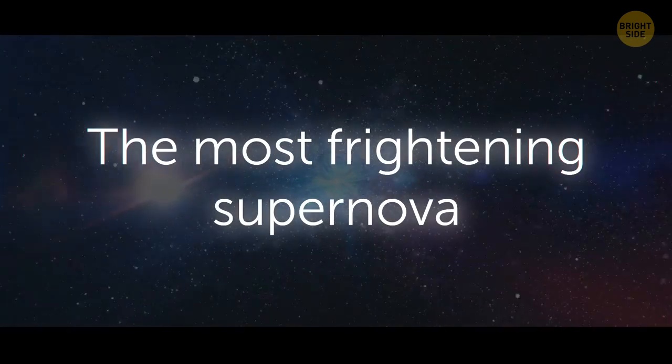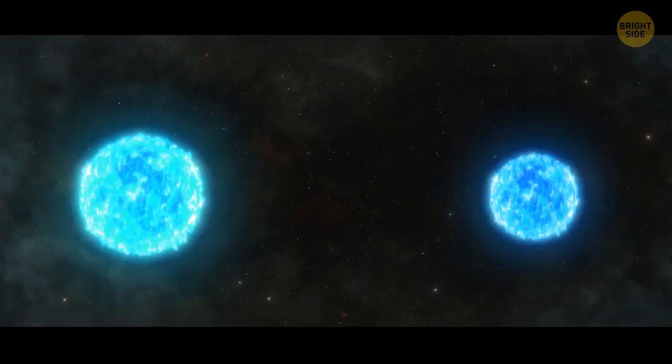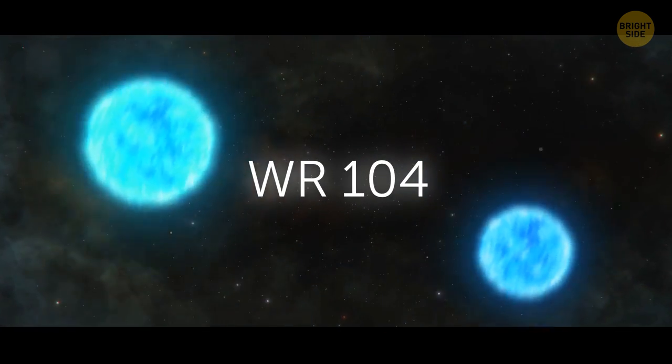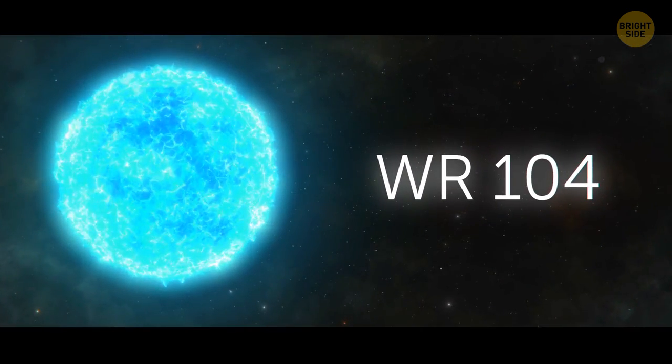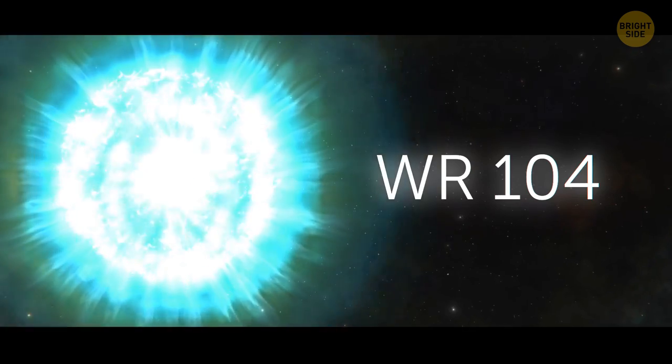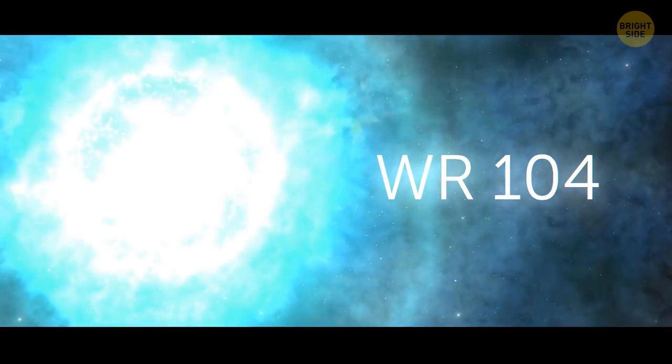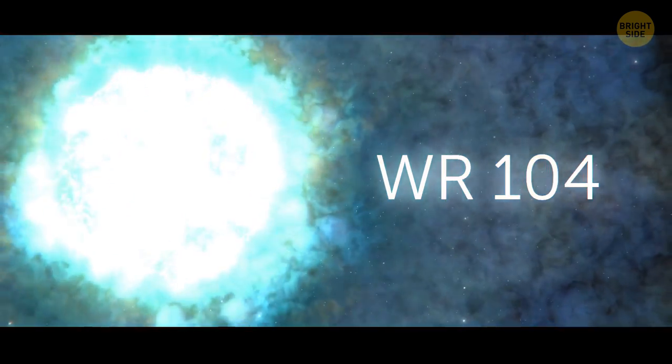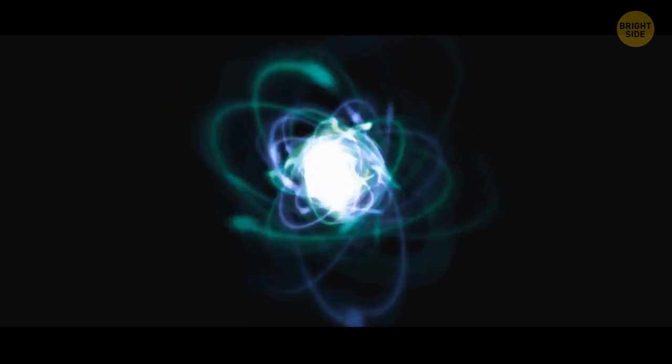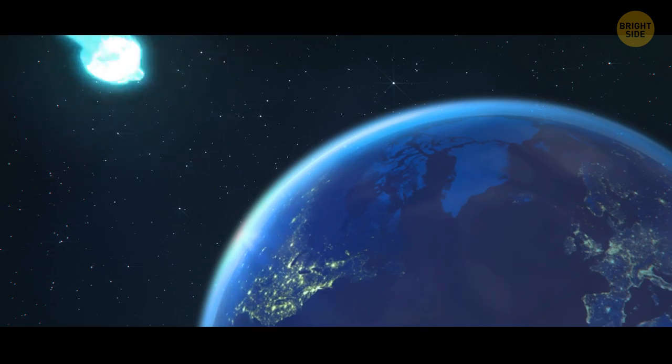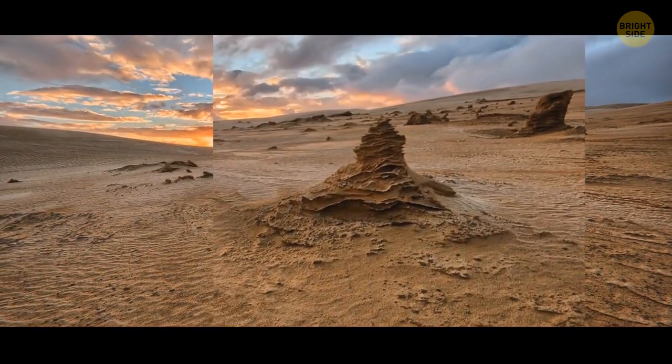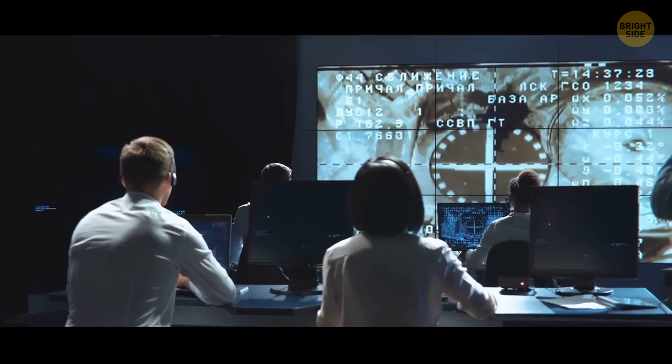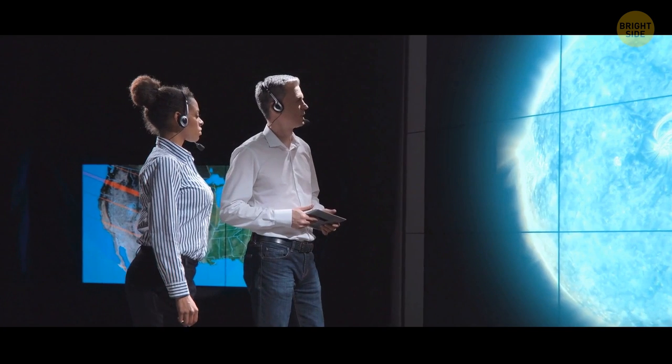The most frightening supernova. The WR-104 star will burst into a supernova in 3,000 years. This star is 75,000 light-years away from us, and the blast won't touch us at all. But there is a small chance it'll also produce a gamma-ray burst in the process. If this stream of energy happens to aim right at us, it will negatively affect life on Earth. Good news? Scientists say that's very unlikely.